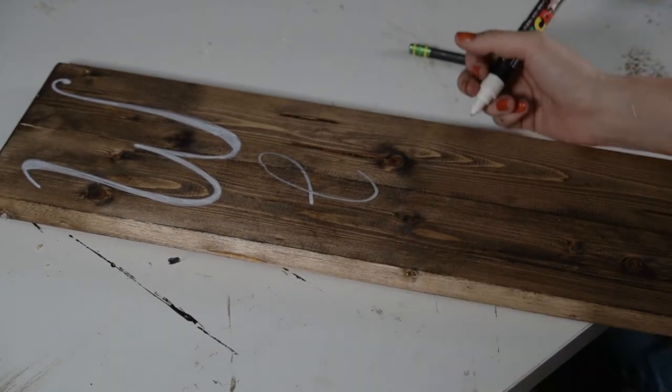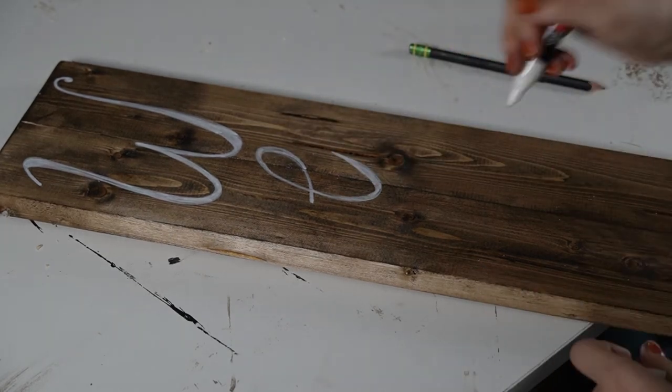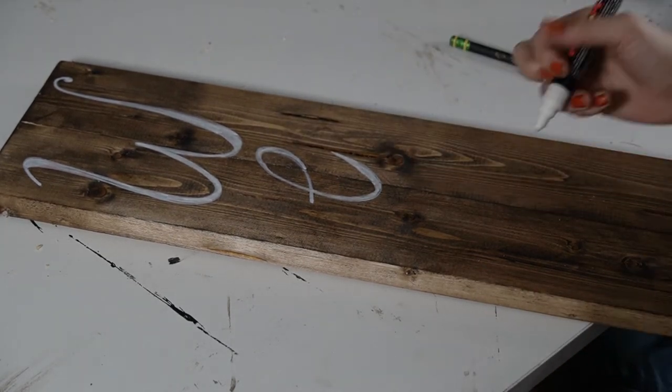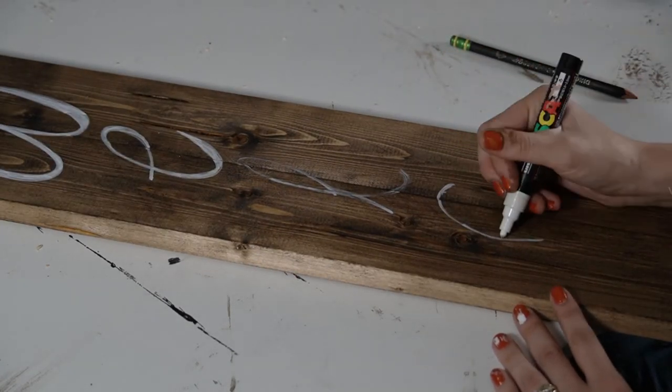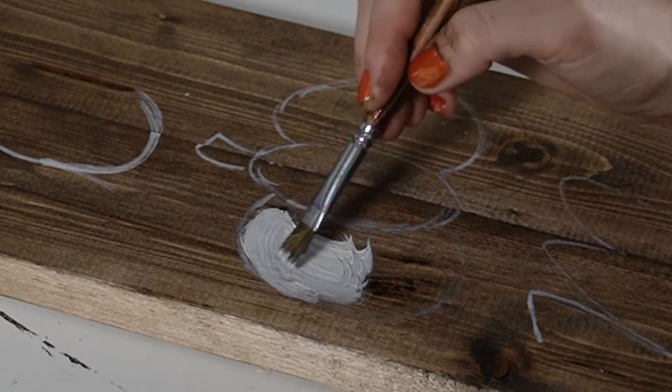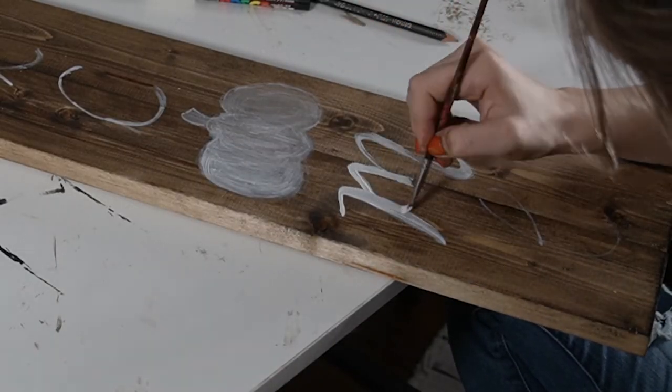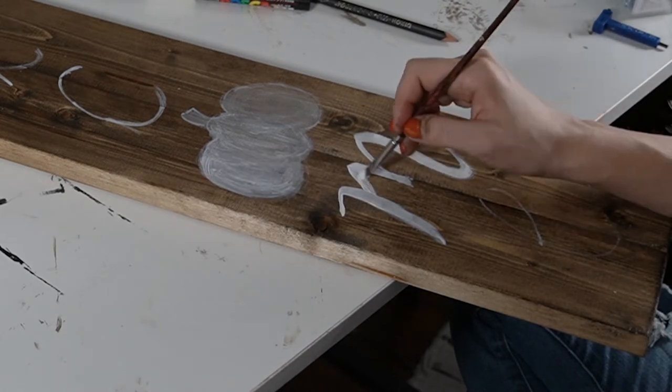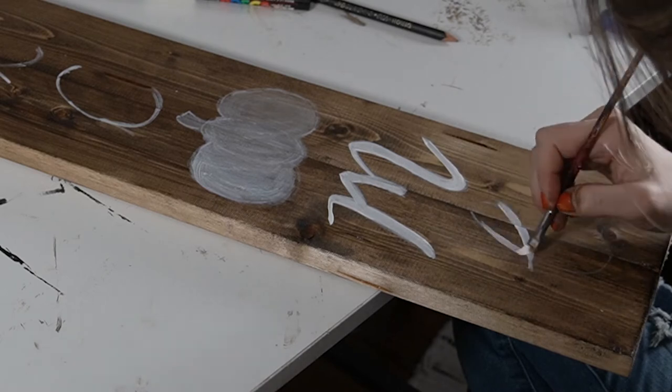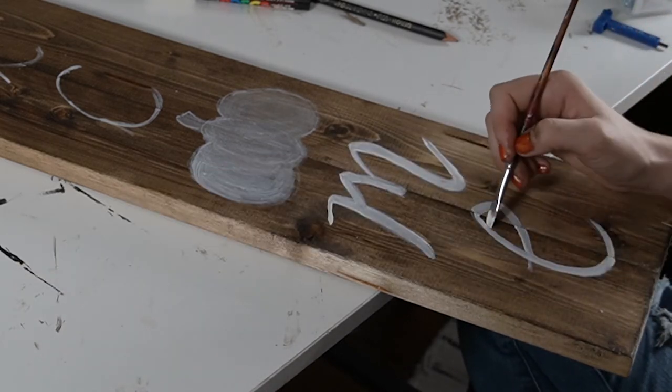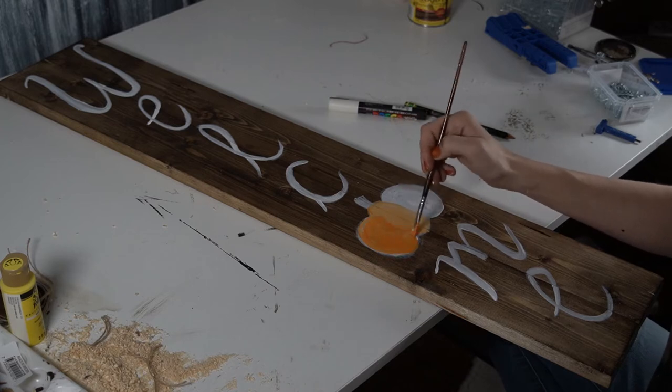And then using my white Posca paint marker, I went over each one of those letters. But I did hit a point where the Posca marker was getting all gunked up with stain and wasn't really working anymore, so I switched over to some just good old-fashioned paint and a paintbrush. Bonnie and Clyde, I need you guys to be quiet. My goal was achieved of getting Bonnie a friend, but my goal of making my house quiet for voiceovers was not achieved.